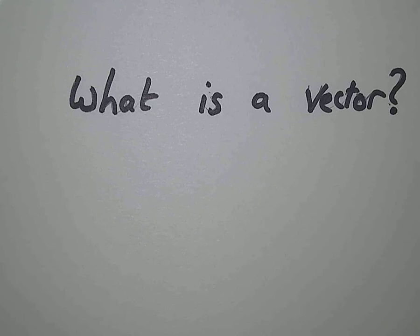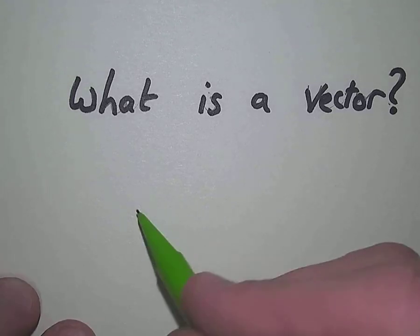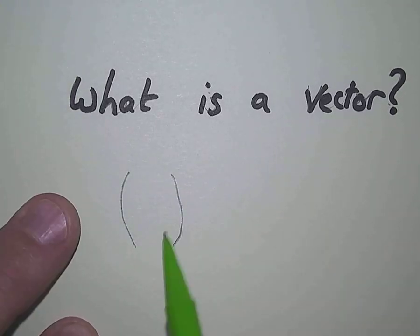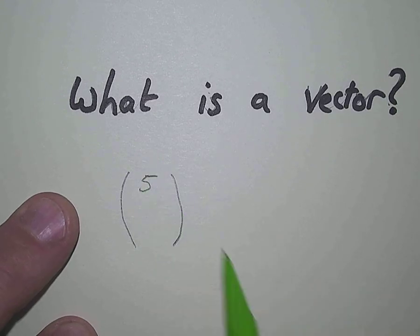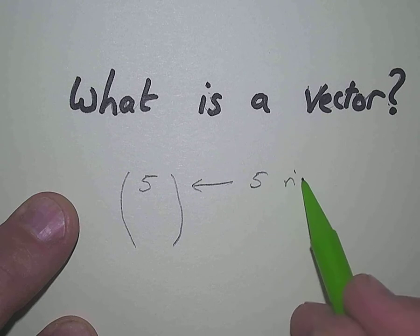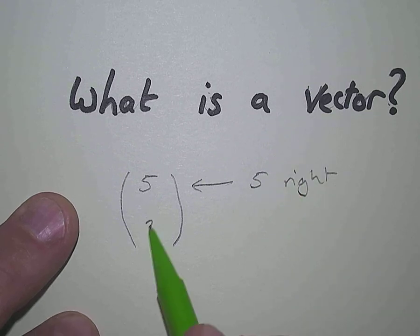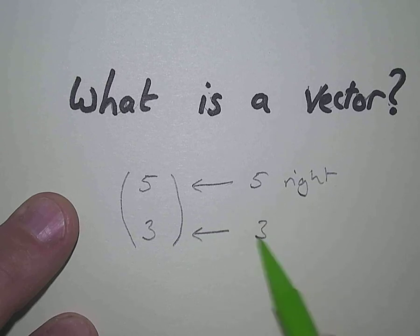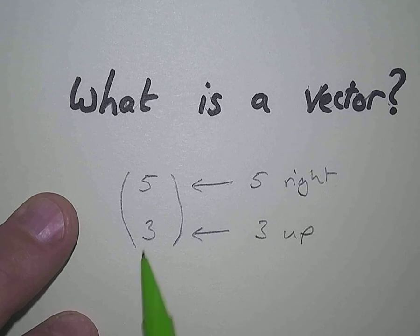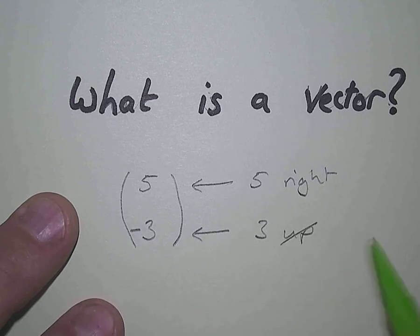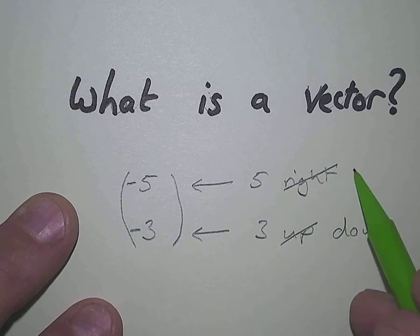Now it can get a bit trickier than this. Instead of telling you to translate something four right and five down, you can be given a vector. A vector is just a different way of writing how much right and how much up or down you want to go — two numbers written in brackets. The top number, let's say five, that's along the corridors — that would mean five right. The bottom number is up the stairs — that would mean three up. If I wanted to go down, I'd change that to a minus, and that would now be three down. If I wanted to go left, I'd make that one a minus, and that would be five left.